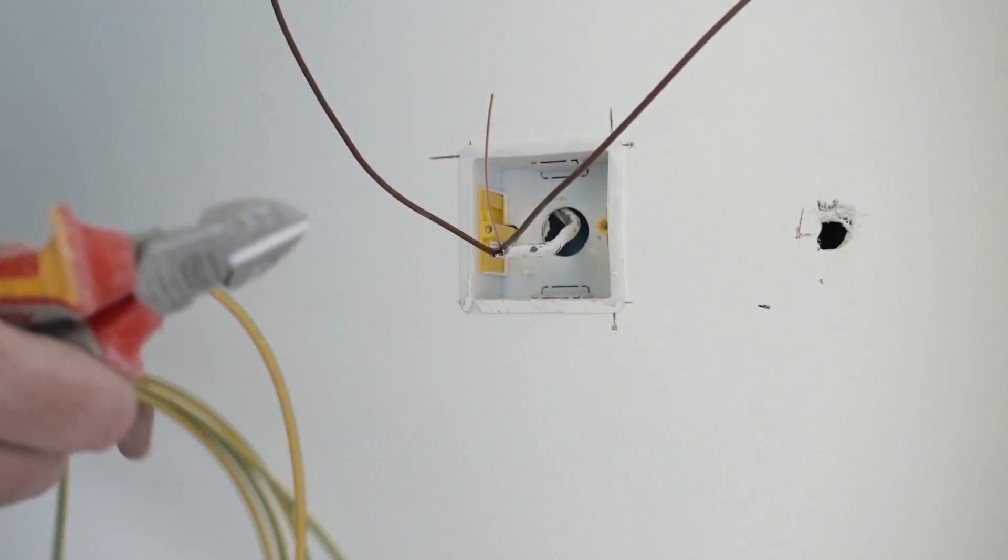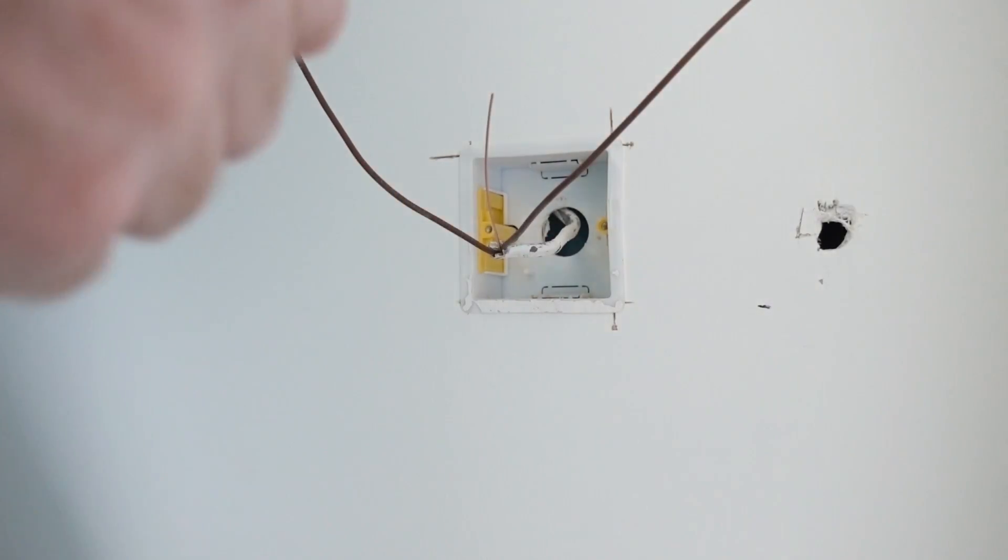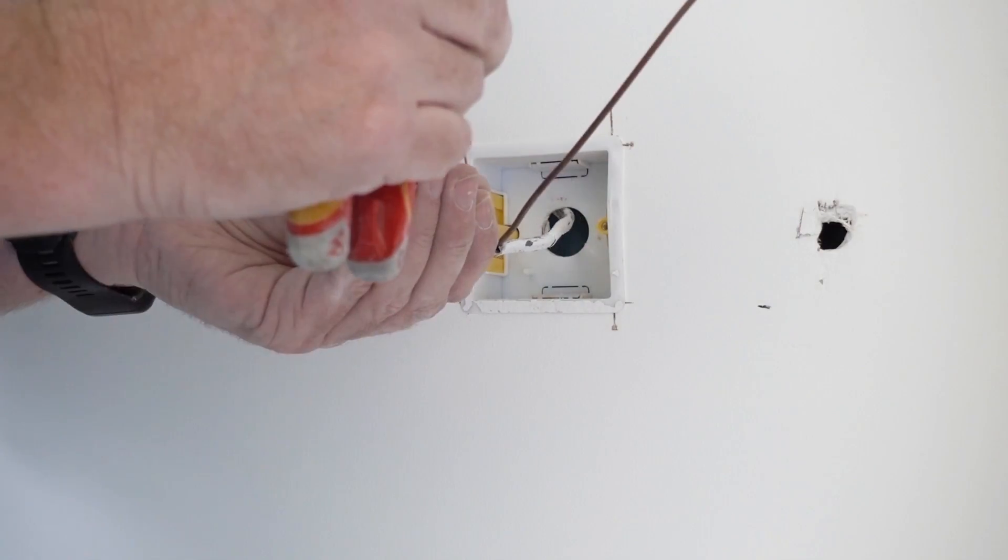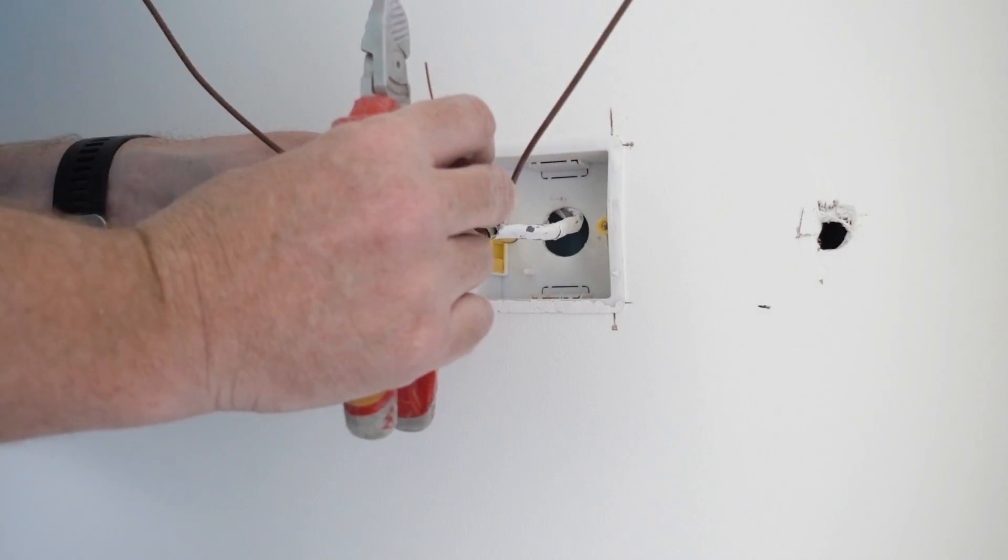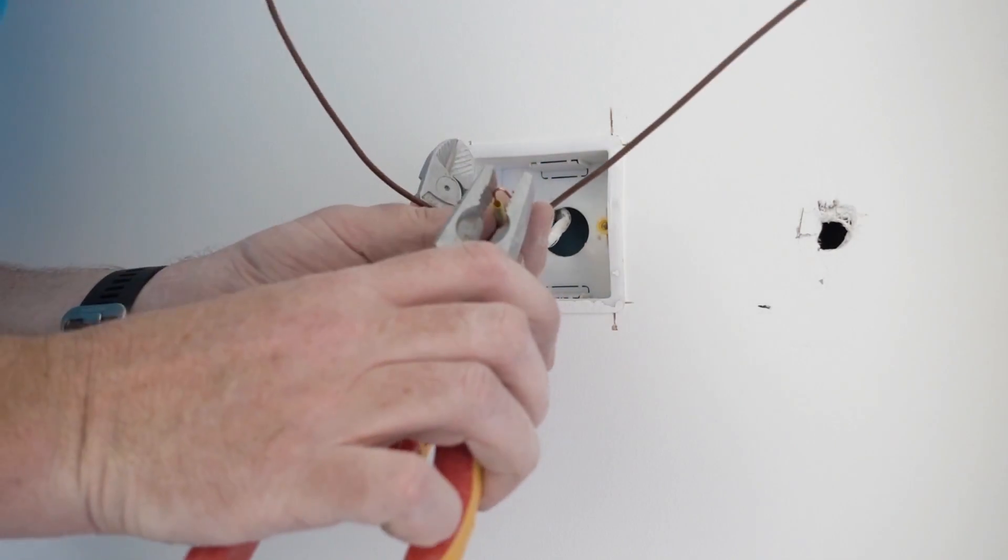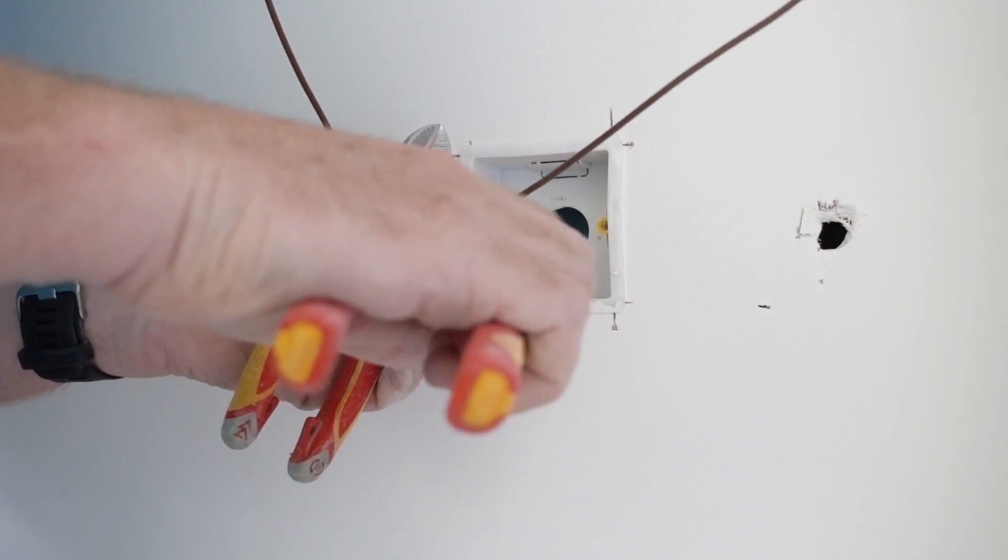Right, now with the earth wire, I'll just cut it shortish there and get a bit of earthing sleeve and put it over there. Now if this was a metal back box, the earth would just connect into the terminal on the metal back box, but because this is a plasterboard back box it doesn't have one.